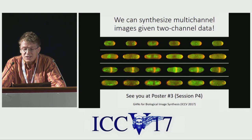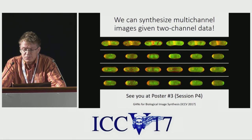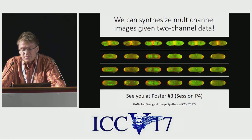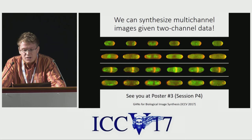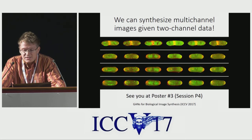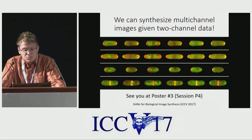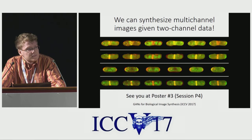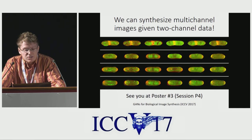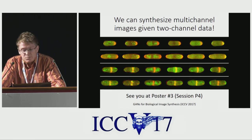The result roughly mimics the growth of the real cells. First, each cell grows on one side, then it grows on both sides, then it prepares to divide into the two daughters. The speed of the growth, of course, has nothing to do with the real speed.